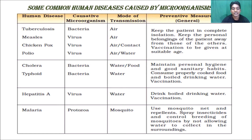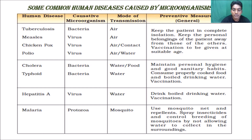Malaria is caused by protozoans and is spread through mosquitoes. It is a protozoan disease. The female Anopheles mosquito is responsible for the spread of malaria. Preventive measures include using mosquito nets and repellents, spraying insecticides, and controlling mosquito breeding by not allowing water to collect in our surroundings.